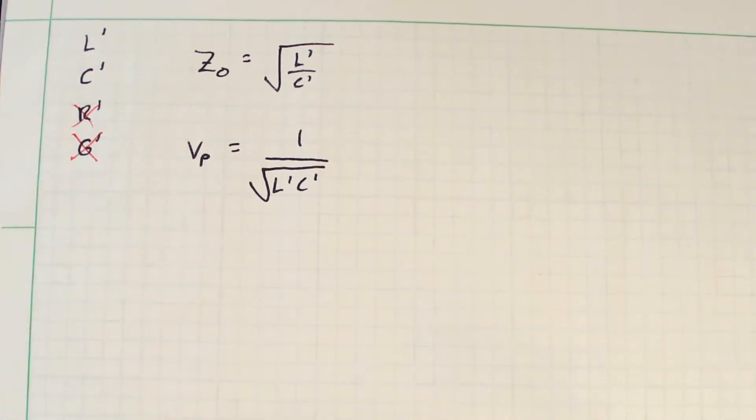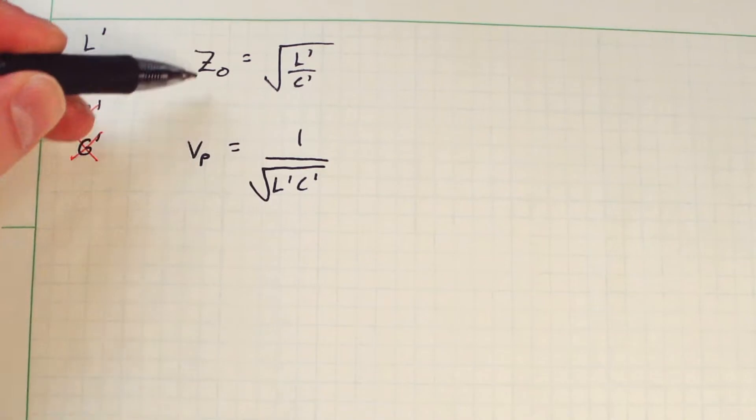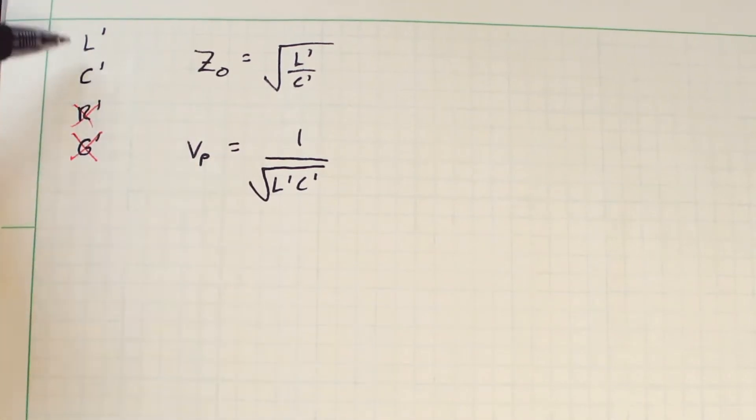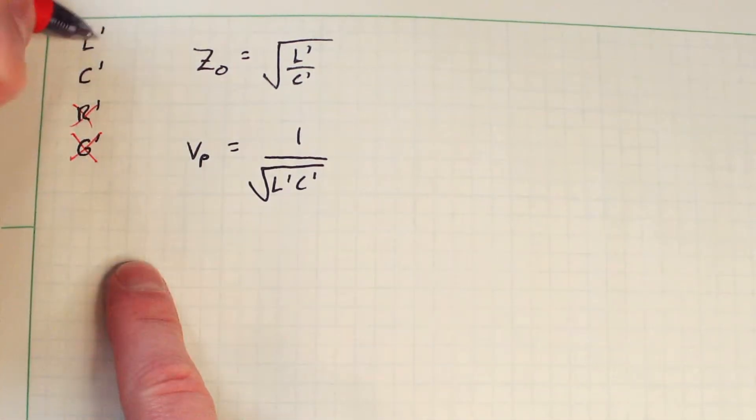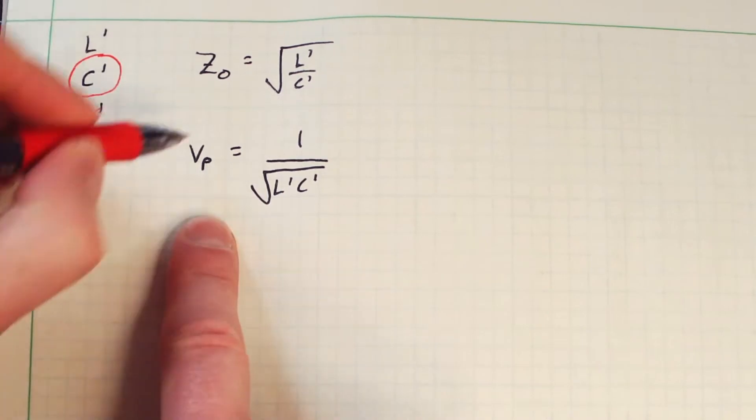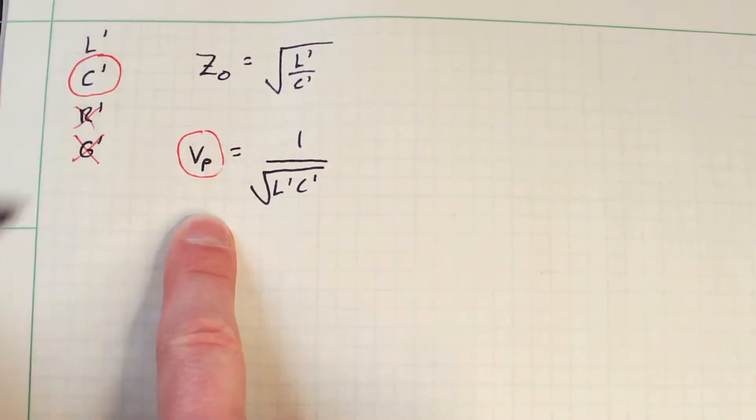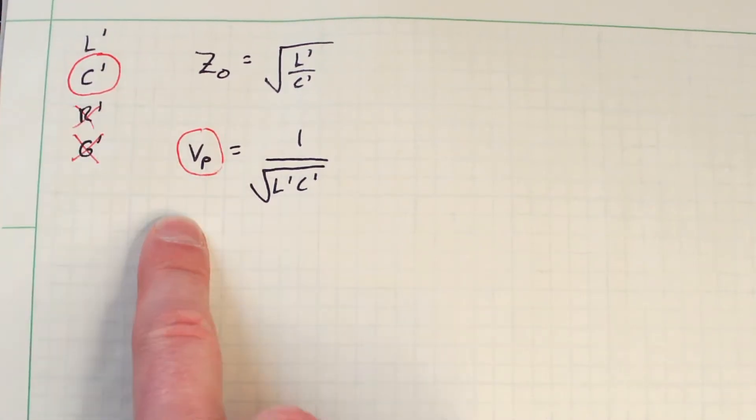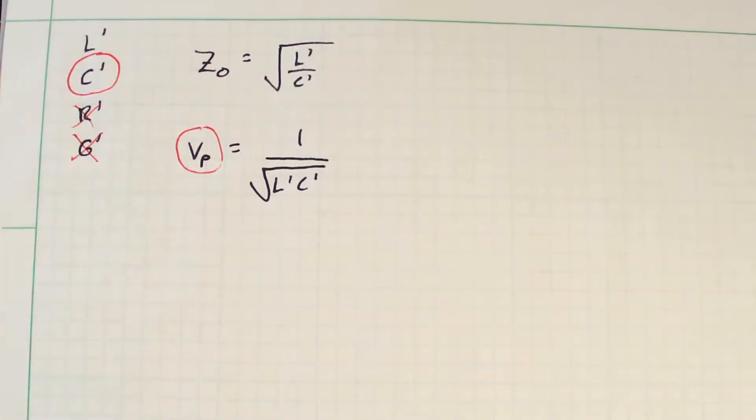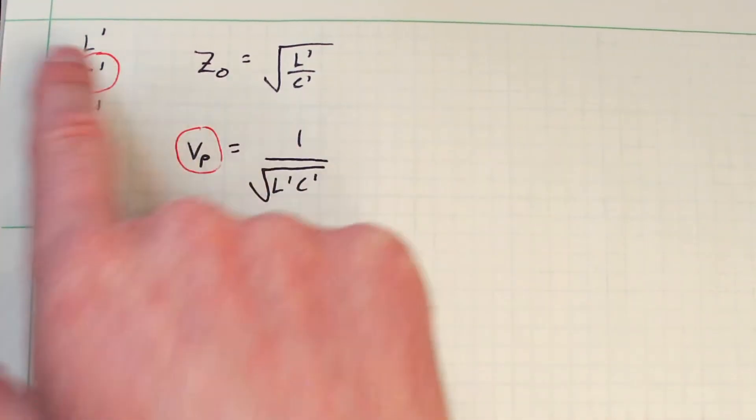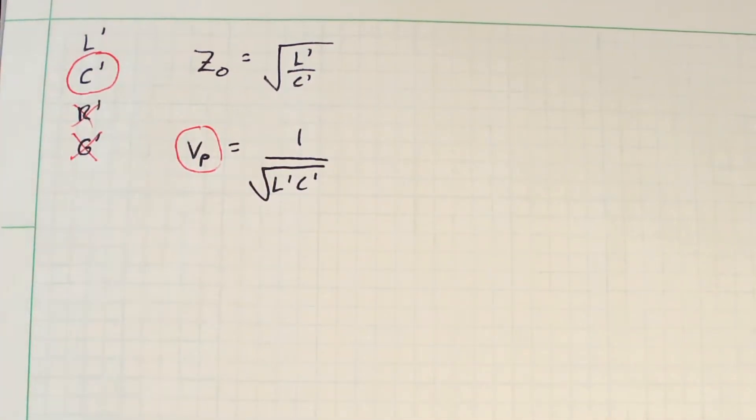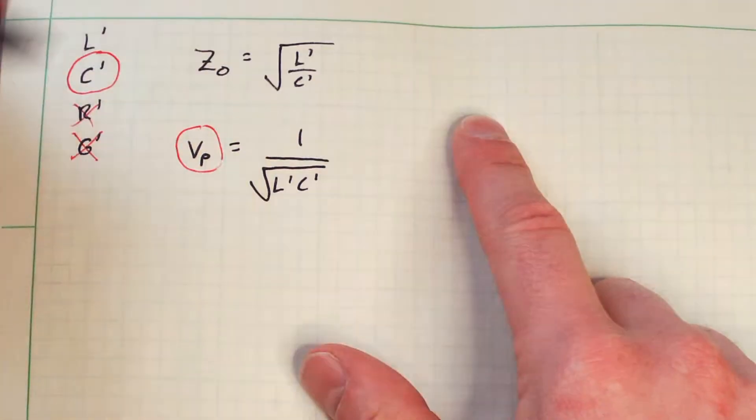So in principle, I could hypothetically measure these and derive these, but it turns out it's not really as simple as it sounds. So what we're really going to do is actually measure C' and then we're going to measure Vp. And then given these two parameters, we are then going to derive the characteristic impedance Z0 and the characteristic inductance L'.